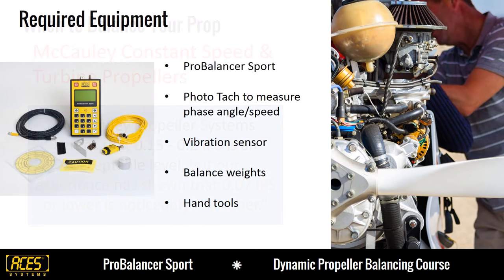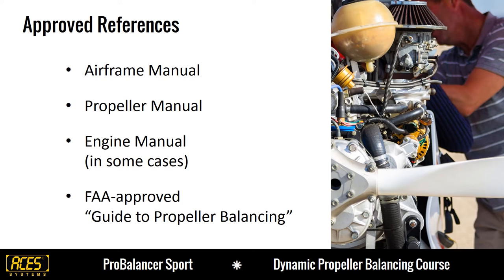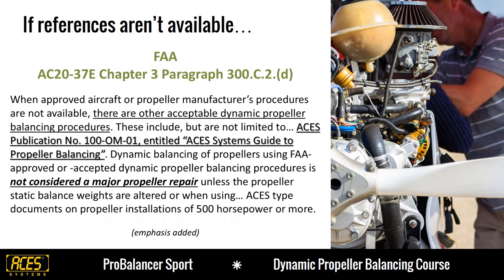To conduct a propeller balance using the ProBalancer Sport Analyzer, you'll need the analyzer, a photo-tac to measure phase angle and speed, a vibration sensor, balance weights, and hand tools. You should consult the FAA-approved references to guide you through the balance job, including your airframe, engine, and propeller manuals, and the ACES guide to propeller balancing. If you do not have these references, the FAA stipulates that you can use the ACES guide to propeller balancing. According to Aircraft Circular 20-37E, this procedure is not considered to be a major propeller repair unless the propeller static balance weights are altered or when your engine has more than 500 horsepower.